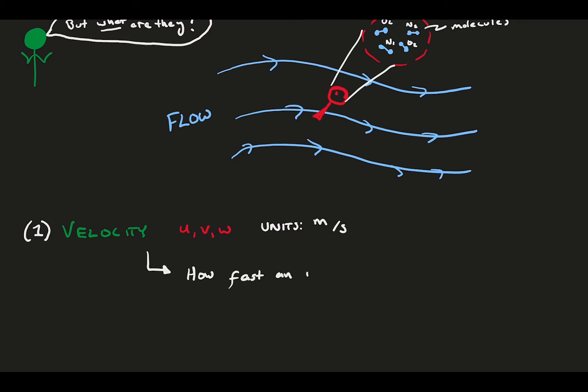For velocity, we consider a small fluid blob, but not individual molecules, and we observe how fast these blobs pass through our observation window.